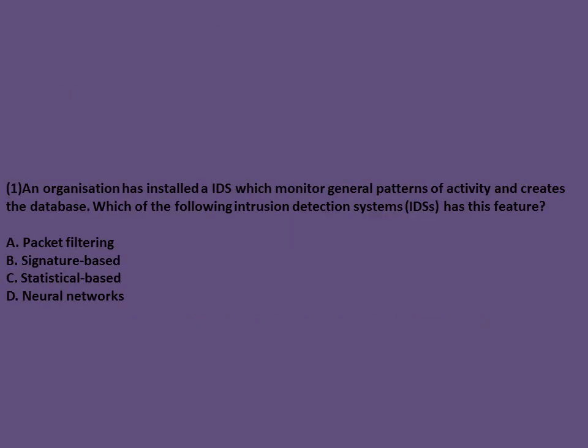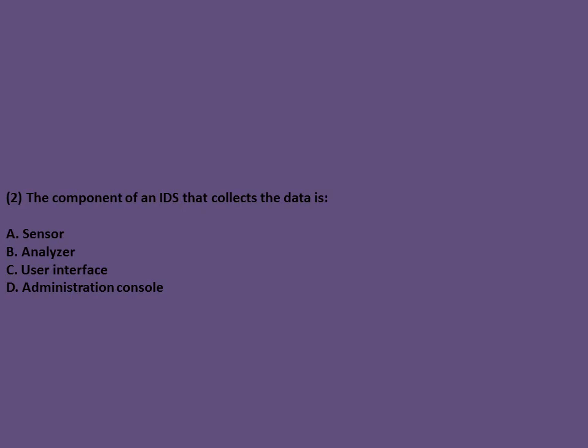CISA exam question: An organization has installed an IDS which monitors general patterns of activity and creates a database. Which of the following intrusion detection systems has this feature? The answer is Neural Networks. The component of an IDS that collects the data is the sensor.